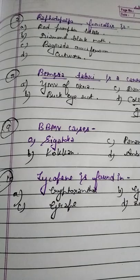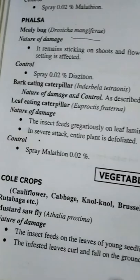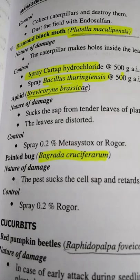BBMB causes — Option A: Sigatoka, Option B: Kokkan, Option C: Panama, Option D: Anthracnose. You have to remember the full form of BBMB to attempt this question. BBMB is Banana Bunchy Top Mosaic — remember the full form and you will attempt this very clearly.